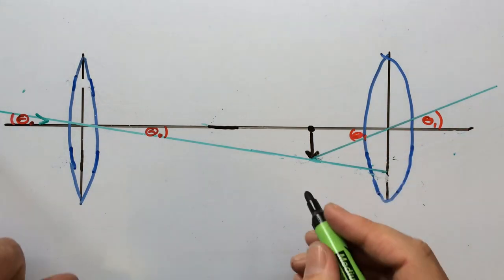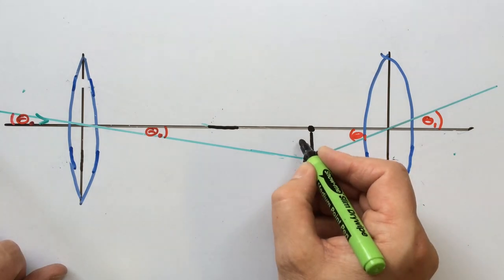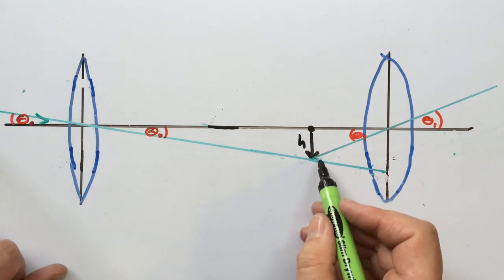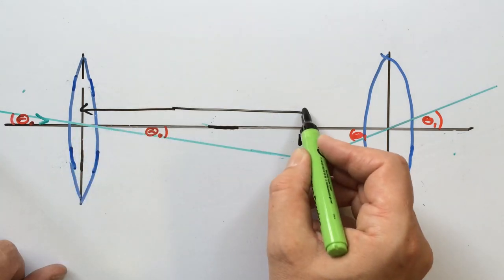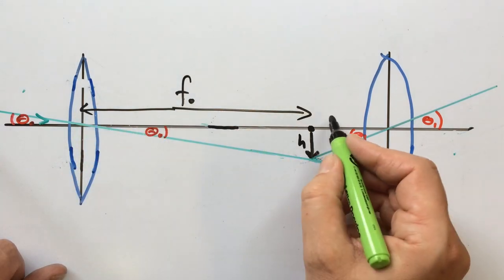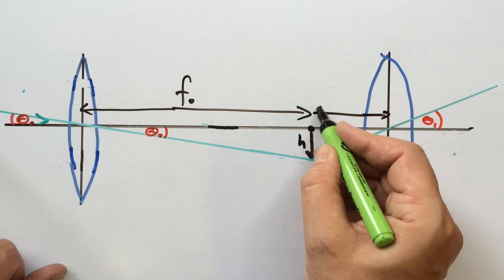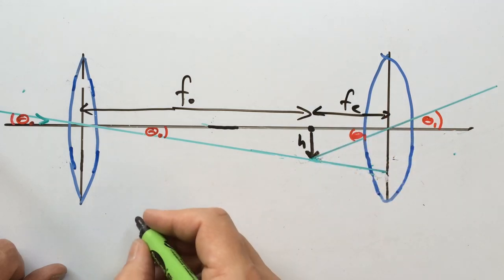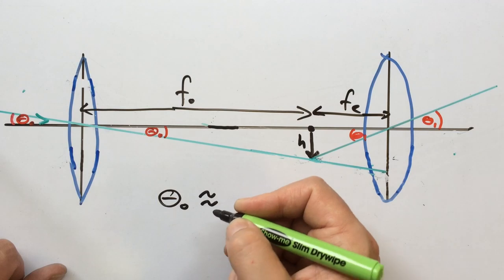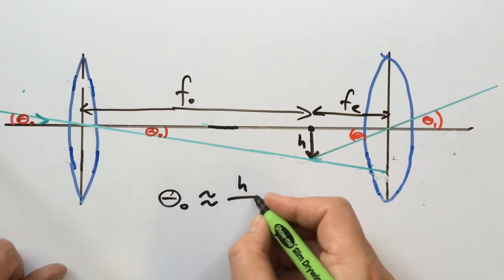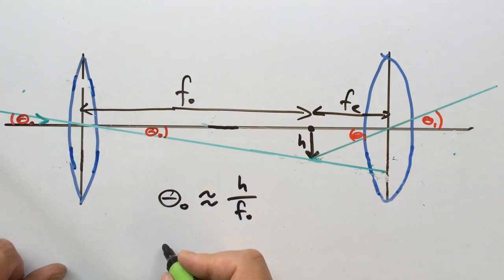Now using a little bit of trigonometry, if we call the height of the image in between the lenses h, and based on the fact that this distance here is the focal length of the objective lens and this distance here is the focal length of the eyepiece, to a rough approximation theta_o is going to be about h divided by f_o whereas theta_i is approximately h divided by f_e.